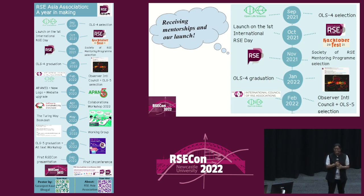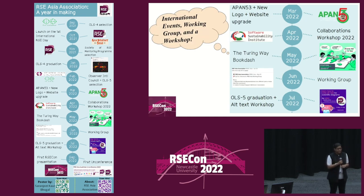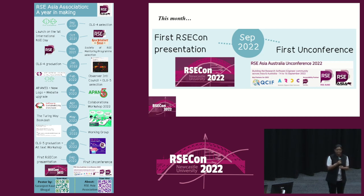Since then we've been working on various activities for the community in Asia. What has been really helpful is the mentorship programs by the Open Life Science cohort four and five, and also the mentorship by the Society of RSE, which my co-founder and I have been part of. It's now been a whole year, and we'll be hosting our first unconference in collaboration with RSC Australia from September 14 to 16. I'm here to collect ideas on how we can grow our community.